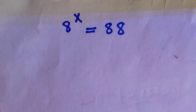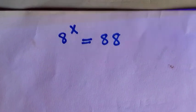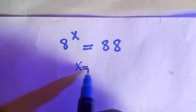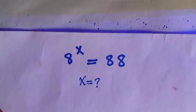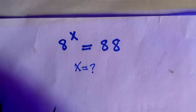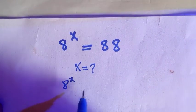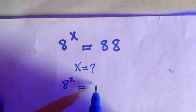Welcome to another video. In this problem we want to solve for x given that 8 raised to the power of x equals 88. So the first thing to do is we have 8 raised to the power x equals to 8 multiplied by 11.